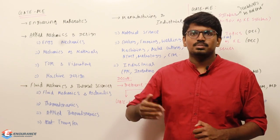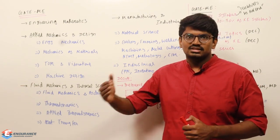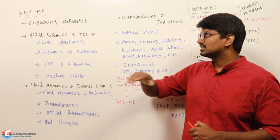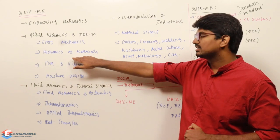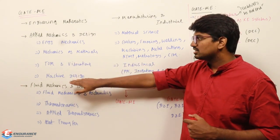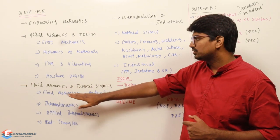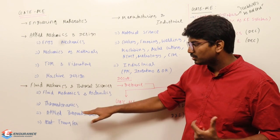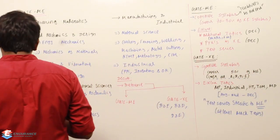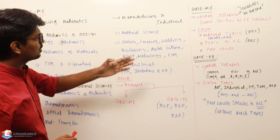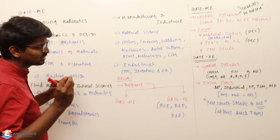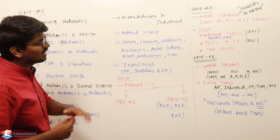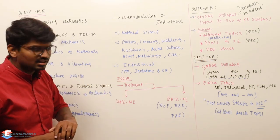In GATE ME, Engineering Mathematics covers linear algebra, probability, differential calculus, integral calculus, vector calculus, differential equations, complex numbers, and numerical methods. Under Applied Mechanics and Design we have engineering mechanics, mechanics of materials (strength of materials), thermal vibrations, and machine design. Fluid Mechanics and Thermal Sciences covers fluid mechanics, hydraulics, thermodynamics, applied thermodynamics, and heat transfer. Manufacturing covers material science, casting, forming, welding, machining, metal cutting, non-traditional machining, and metrology. Industrial Engineering covers PPC, inventory, and more.